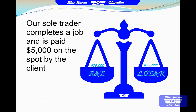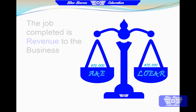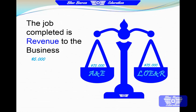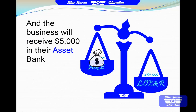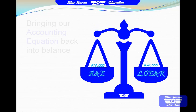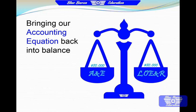Our sole trader completes a job and is paid $5,000 on the spot by a client. The job being completed is revenue, and of course we now have more money in our bank account which is an asset, bringing our accounting equation back into balance.